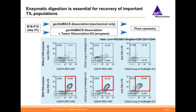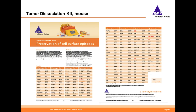These data show that enzymatic digestion is essential for the recovery of important TIL populations. Furthermore, we do in-house quality control of the enzymes used, and the tumor dissociation kit was optimized for epitope preservation. We tested over 200 epitopes, the vast majority of which were not affected by our enzyme composition. This list of tested epitopes can be accessed on our website.